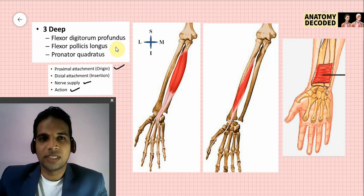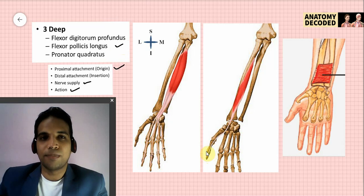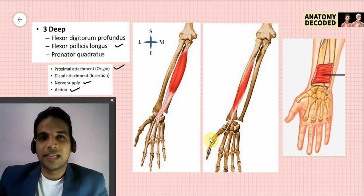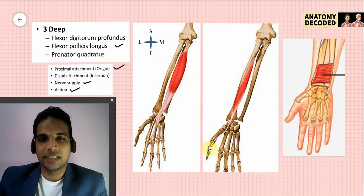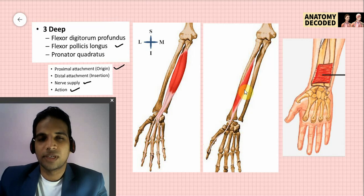Flexor pollicis longus arises from the anterior aspect of the radius, below the anterior oblique line. Its distal attachment is at the base of the distal phalanx of the thumb. Its action is flexion of the distal interphalangeal joint of the thumb, as well as mild flexion at the wrist joint. Nerve supply is the anterior interosseous nerve, a branch of the median nerve.